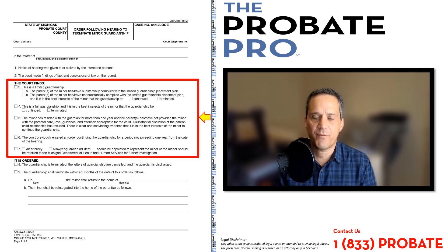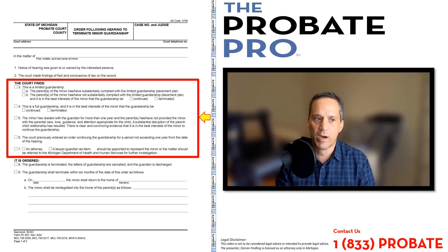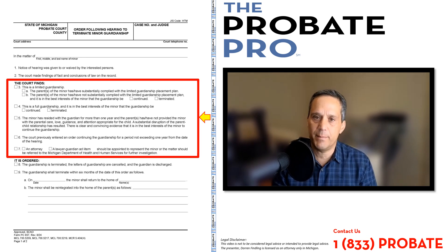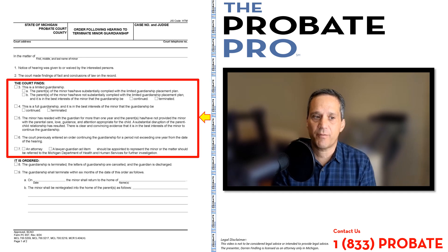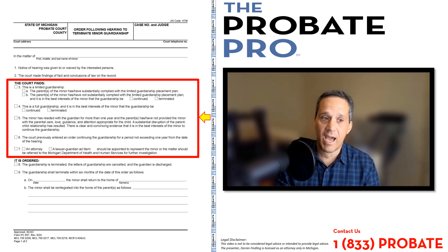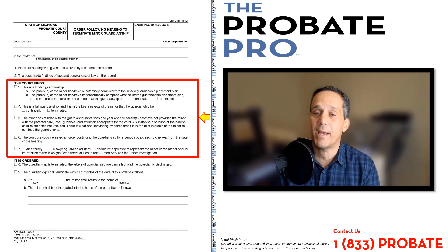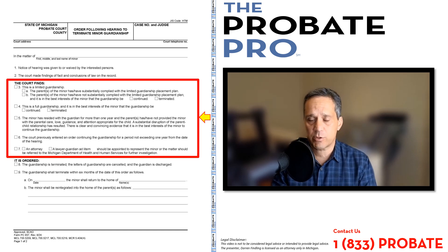Paragraphs three through nine are essentially click boxes that allow you to use this form specific to the circumstances that have occurred in this particular matter. Paragraph three relates to a limited guardianship — if your matter was not a limited guardianship, that area would be left blank. If it is a limited guardianship, it would be checked. Sub-option A provides that the parents of the minor have substantially complied with the limited guardianship placement plan, or B, they have or have not complied with the placement plan, but it is in the best interest of the minor that the guardianship be terminated or continued.